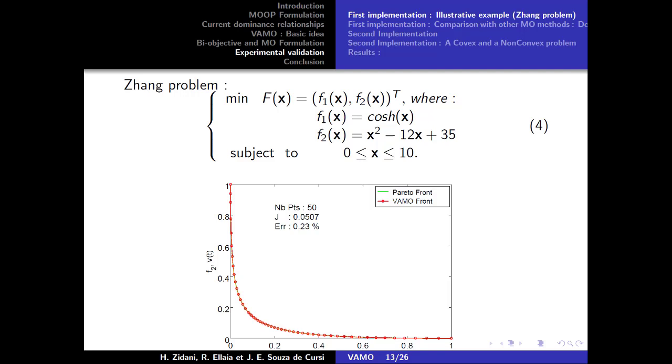To illustrate the efficiency of the VAMO method, we will focus on the case of convex problems. We used an iterative procedure based on the calculation of the surface by the trapezoidal method. And for each iteration, we searched the suitable point that can best represent the Pareto curve taking into account the already identified points.